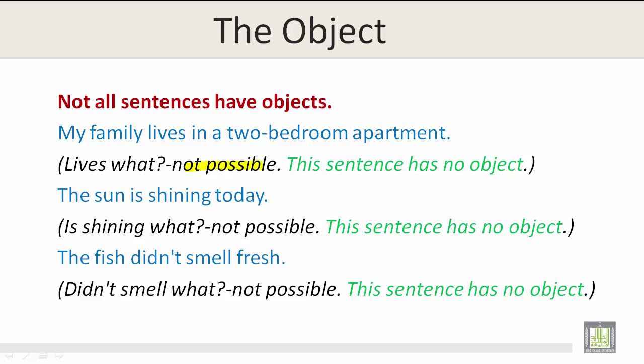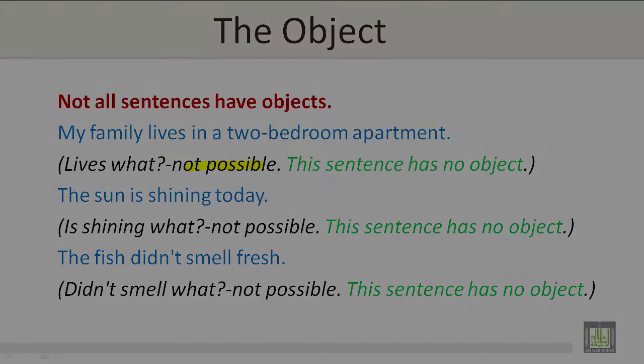The sun is shining today — is shining what? It's not possible. This sentence has no object. The fish didn't smell fresh — didn't smell what? This isn't possible. This sentence has no object.